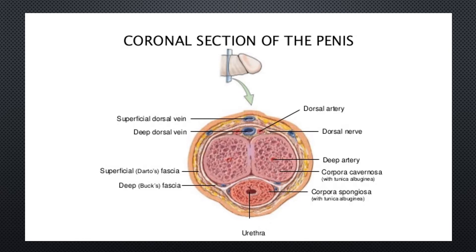The scrotum consists of smooth muscle and subcutaneous tissue that runs through the shaft, body, and glans of the penis. The corpus spongiosum is a spongy tissue that runs through the shaft, body, and glans of the penis. The corpus spongiosum surrounds the urethra — the tube through which urine and sperm pass from the body.